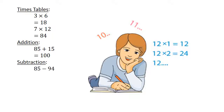Subtraction: 85 minus 94 equals negative 9. Division: 44 divided by 4 equals 11.